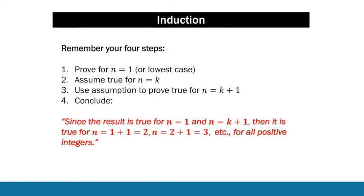Whatever sort of induction proof you're doing, you need to remember the four steps. The first is always to prove for n equals 1, or otherwise whatever the lowest case is. For example, if you're asked to prove for all integers greater than or equal to 3, you would test n equals 3. Whatever the lowest is, you start by proving the result is true for that, just by substitution.